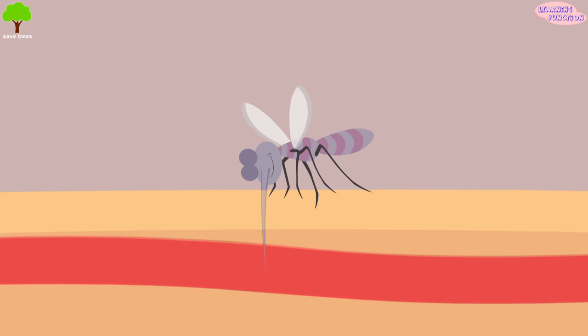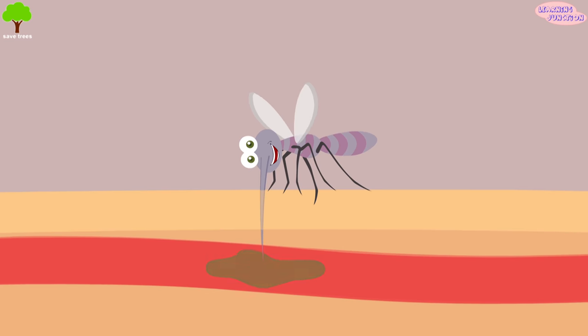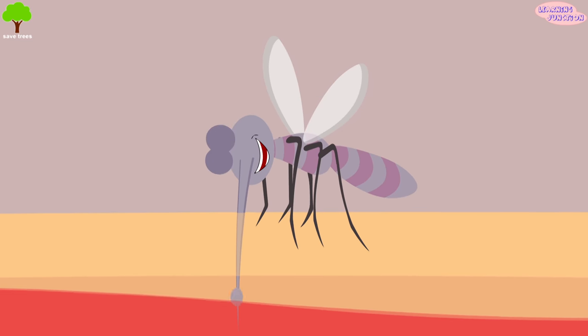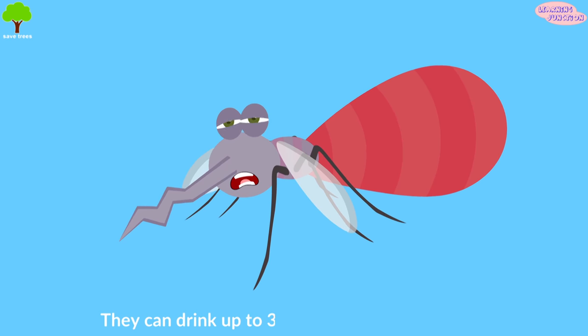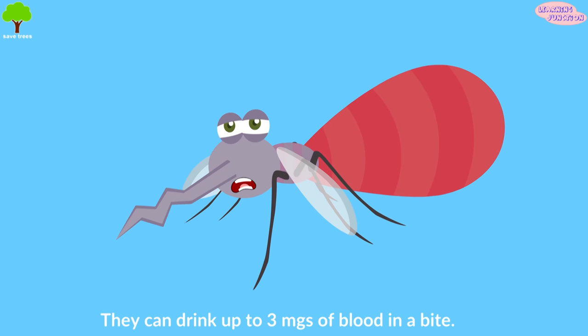It then tries to find a blood vessel for its bite. It again releases a saliva on the blood vessel that keeps the blood flowing. Once it finds the point, it starts sucking blood. They can drink up to three milligrams of blood in a bite.